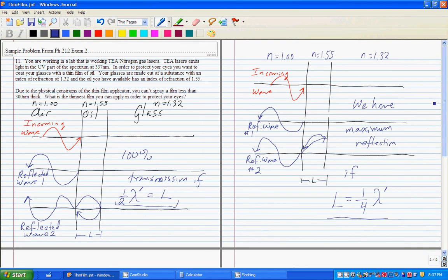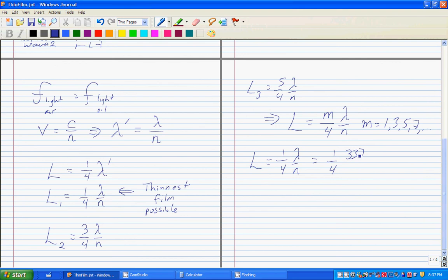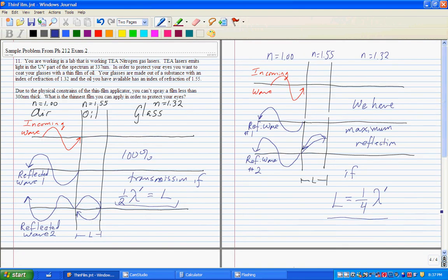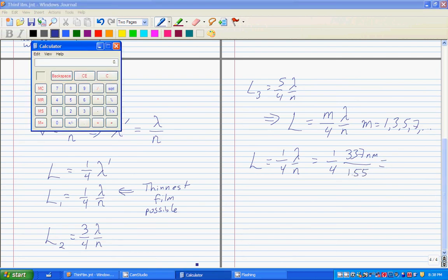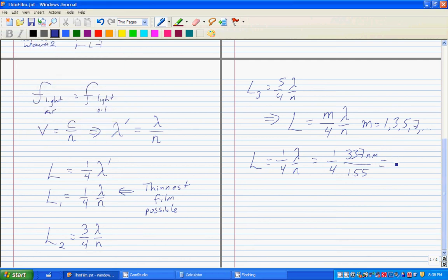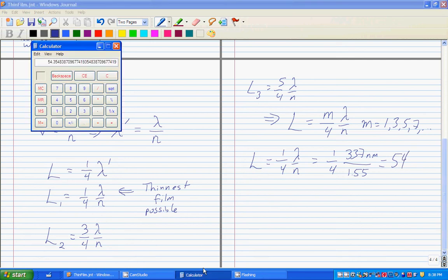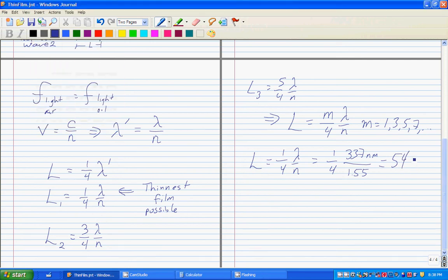Divided by the index of refraction of the oil, not the glass, which is 1.55. If we plug this into a calculator, 337 divided by four divided by 1.55 equals—let's do this to three sig figs—54.3 nanometers.